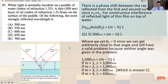Setting m equal to 1 gives lambda equals 3,000 nanometers. m equals 2 gives lambda equals 1,000 nanometers. m equals 3 gives lambda equals 600 nanometers. m equals 4 gives lambda equals 430 nanometers.